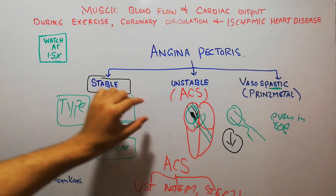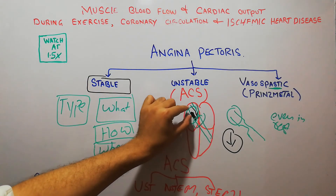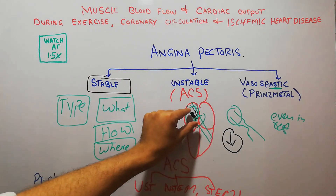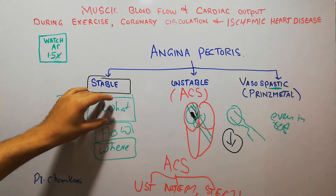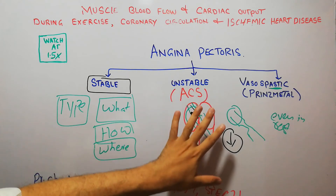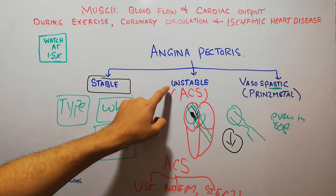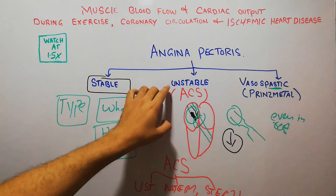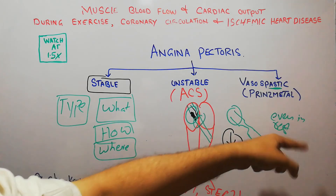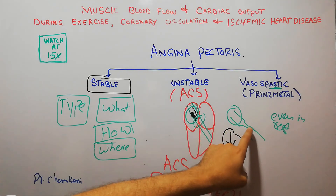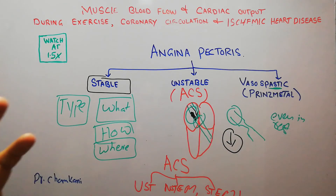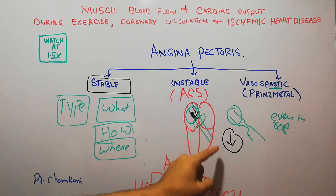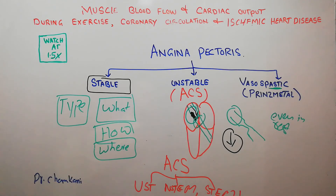In summary: in stable angina there is atherosclerosis but the endothelium is intact, and pain occurs with exertion and subsides with rest. In unstable angina there is atherosclerosis that has damaged the endothelium, pain can occur even at rest, and it is very dangerous as it can lead to myocardial infarction. In vasospastic or Prinzmetal angina, it can also occur at rest, but the vessels are clean — there is just constriction of the coronary vessel reducing blood flow and causing ischemia.